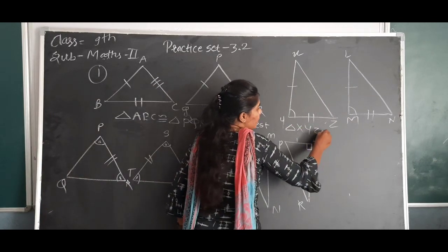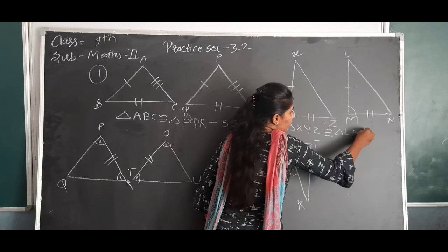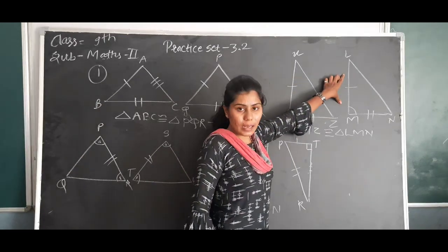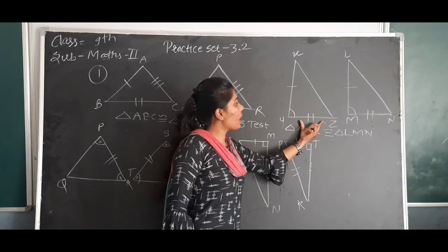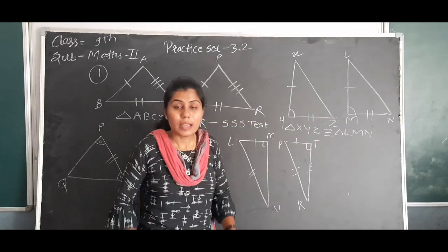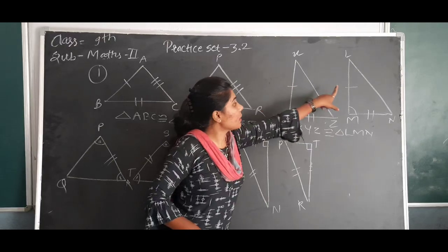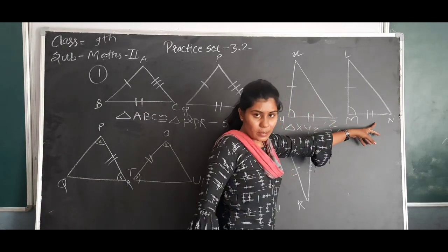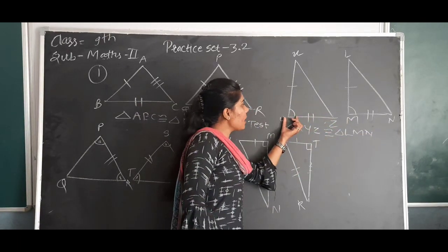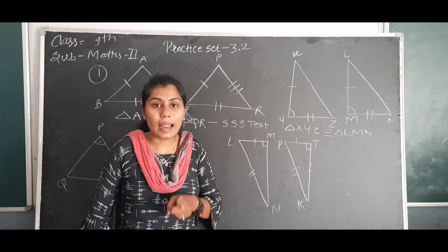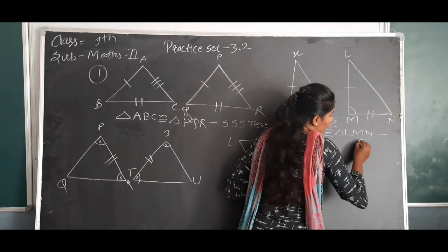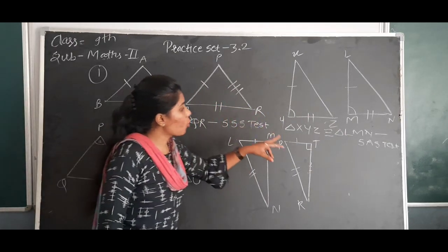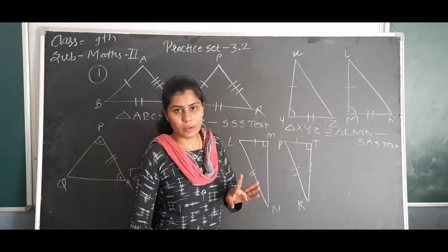Then second: triangle XYZ is congruent to triangle LMN. Here, segment XY is congruent to segment LM, segment YZ is congruent to segment MN, and side XZ is congruent to MN. Also, angle Y is congruent to angle M. So triangle XYZ is congruent to triangle LMN by SSS test.